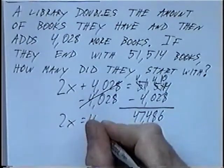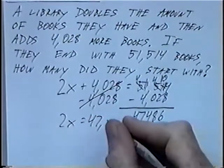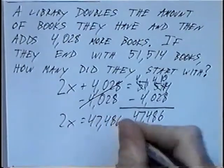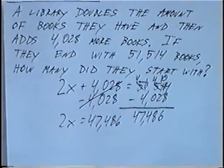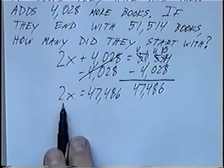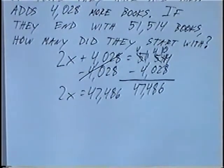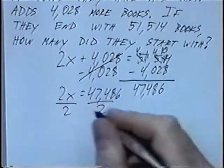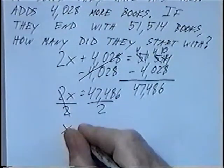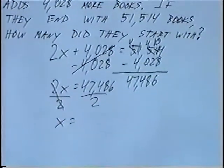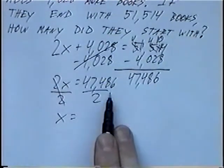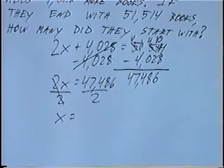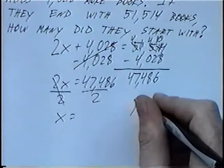And that's what 2x would be equal to. 47,486. Again, to solve for x, 2 times x, or multiply by 2. We can divide by 2 to cancel that out. So we'll have x equals, and we have 47,486 divided by 2. To solve that, we can use long division.